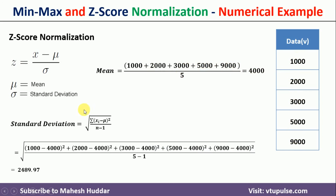For standard deviation, the equation is the square root of the summation of (xi minus mu) squared, divided by n minus 1. Here xi is each data point, mu is 4000, and n is 5. Expanding: (1000−4000)² + (2000−4000)² + (3000−4000)² + (5000−4000)² + (9000−4000)², all divided by (5−1). Taking the square root gives a standard deviation of 2489.97.